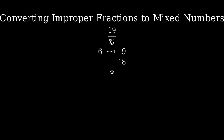To write our mixed number, we use the quotient of 3 as our whole number, and we make a fraction with our remainder of 1 over our divisor of 6.